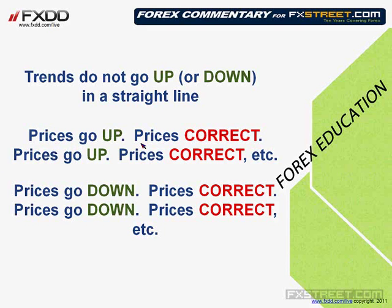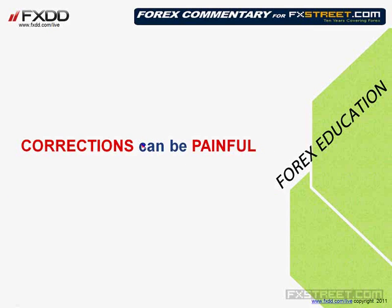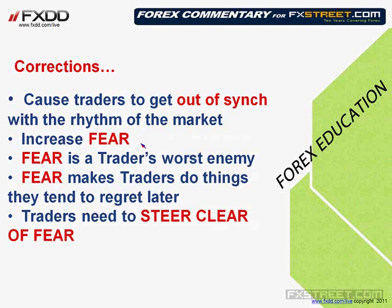We know that trends in the Forex market do not go up or down in a straight line. Prices go up, prices correct, prices go up some more, prices correct some more — it's this up and down motion that tends to happen. Of course, prices also trend down and correct. These corrections can be very painful for traders, so they are something you have to adjust for and be aware of.